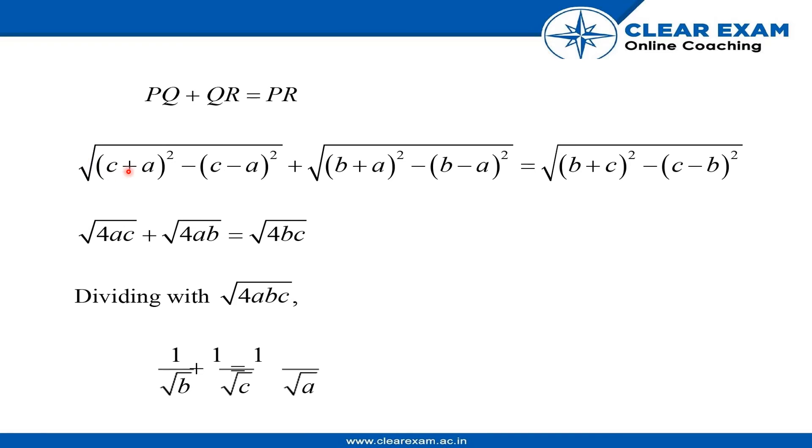Under root of C plus A to the whole square minus C minus A to the whole square, plus under root B plus A to the whole square minus B minus A to the whole square, equals to under root of B plus C to the whole square minus B minus C to the whole square.